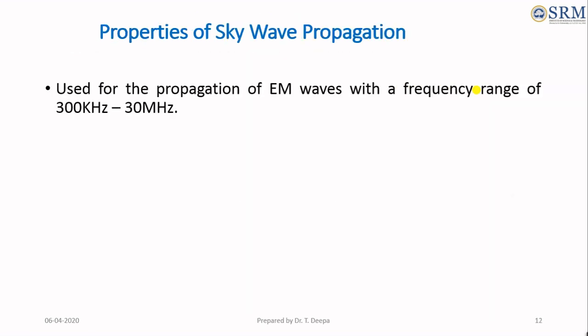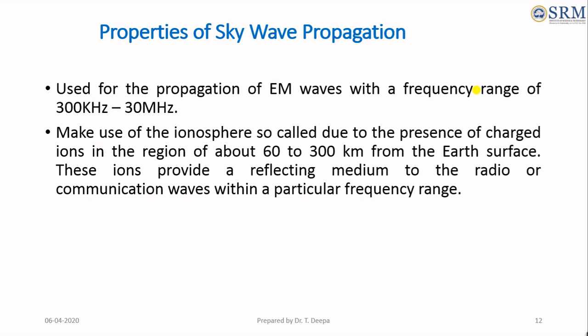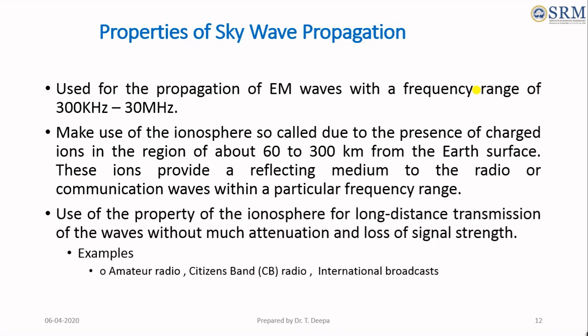Properties of sky wave propagation: This type of propagation is used for long range transmission in the frequency range of 300 kHz to 30 MHz. It makes use of the ionosphere, so called due to the presence of charged ions in the region of about 60 to 300 kilometers from the earth's surface. These ions provide a reflecting medium to radio communications within a particular frequency range. This property of the ionosphere is used for long distance transmission of waves without much attenuation and loss of signal strength. Examples include amateur radio, citizen band radio, and international broadcast.